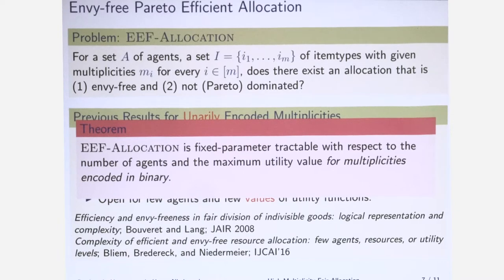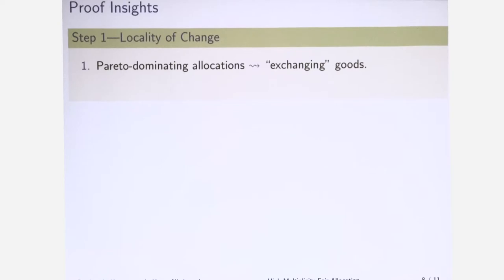I won't give the full proof, I will just give some insights on the proof because they will be important to show a kind of framework that we came up with. The proof generally goes in two steps. The first step is observing that we can kind of bound the size of different allocations that are Pareto dominating our initial allocation. You can think about an allocation that is going to Pareto dominate our candidate allocation as somehow an effect of exchanging goods. Then using IP techniques, namely n-fold IPs, you can show that these changes cannot be too big, so they are bounded by parameters.